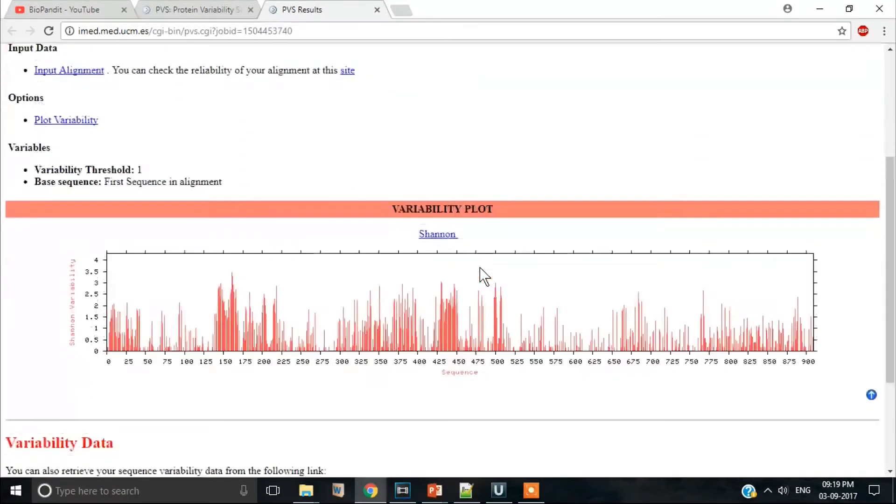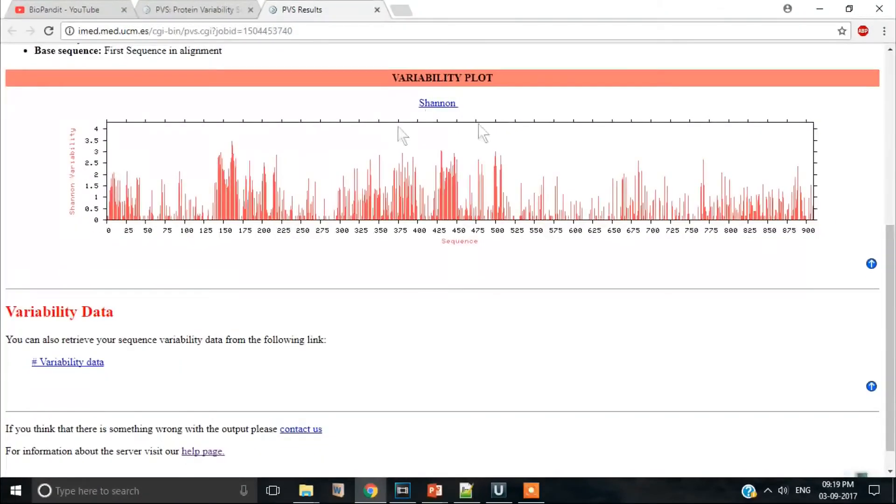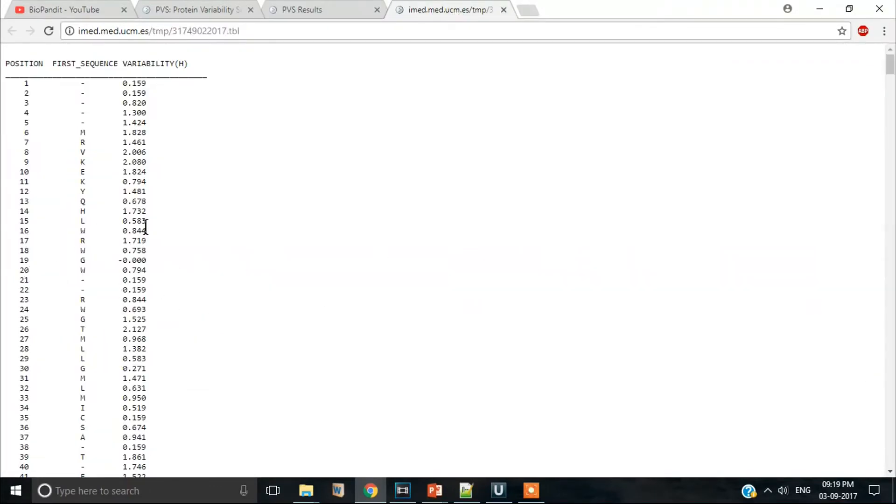See the result page now. The reference sequence is plotted along the x-axis with the estimated Shannon entropy scores being plotted along the y-axis.